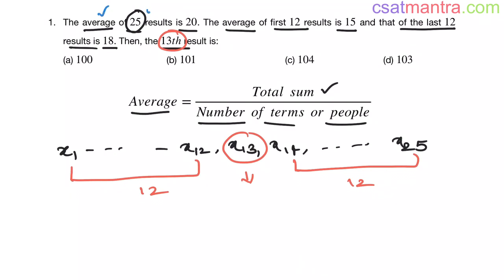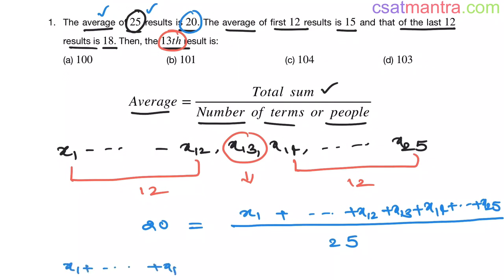Now it is given that average of 25 results is 20. Average is 20. Total sum that is x1 up to x12, x13, x14 up to x25. Total sum of 25 results by number of terms that is 25 results. So x1 up to x12, x13, x14 up to x25. This is 25 into 20, 500. So problems are very simple my friends. All I did is just writing the given information in the form of equation. From that equation, I got this result as 500. Total sum as 500. Clear right?